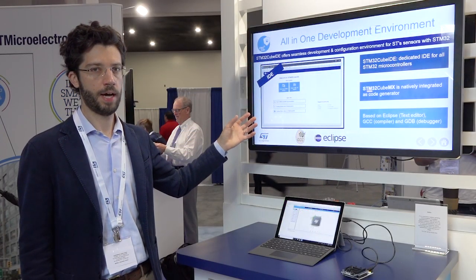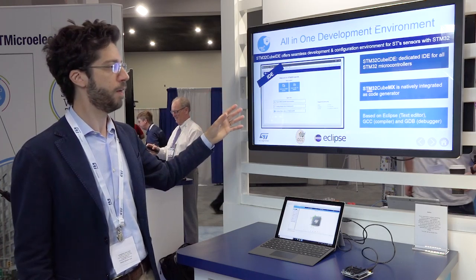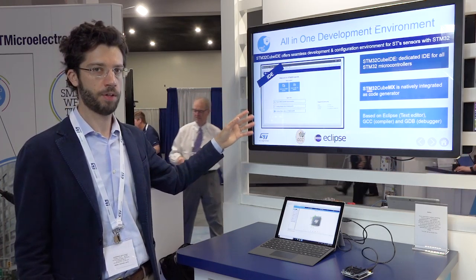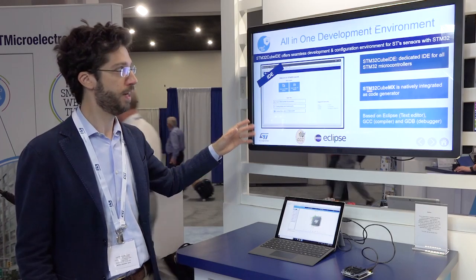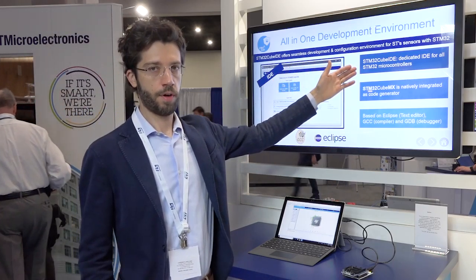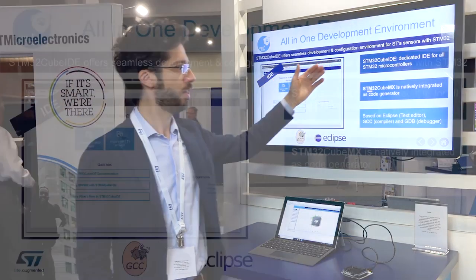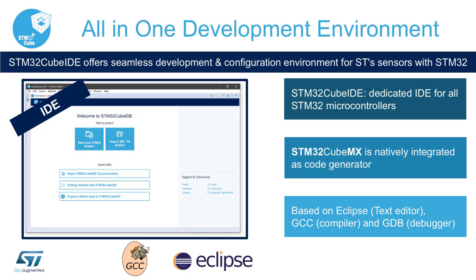The STM32CubeIDE is a development environment you can download from our website. It's available for free. It works for all STM32 microcontrollers. The code generator is natively integrated into the tool and it features a text editor, a compiler, and a debugger. It is based on GCC and Eclipse, and everything is integrated into the tool.